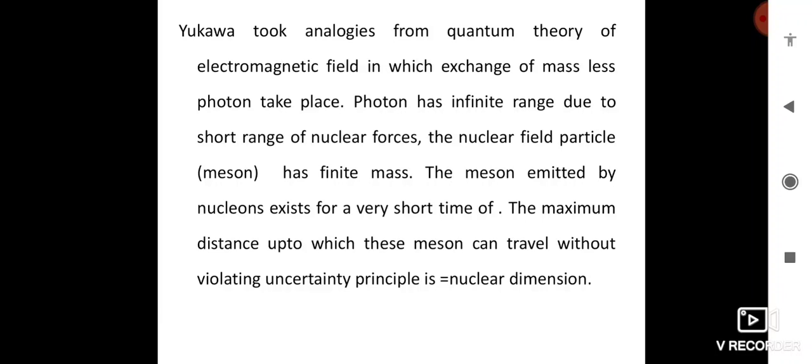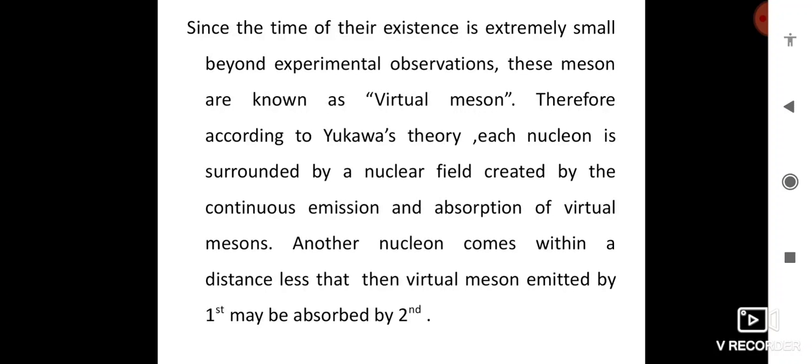The Meson emitted by nucleons exists for a very short time interval. The maximum distance these Mesons can travel without violating uncertainty principle is equal to nuclear dimension. Since the time of their existence is extremely small, these Mesons are known as virtual Mesons.